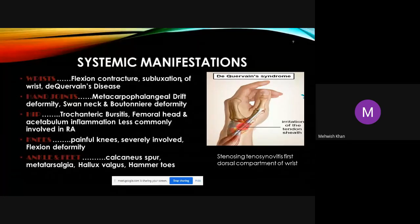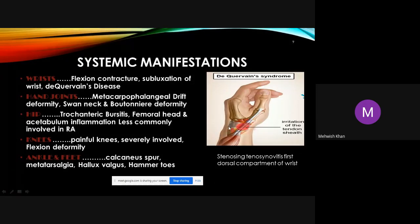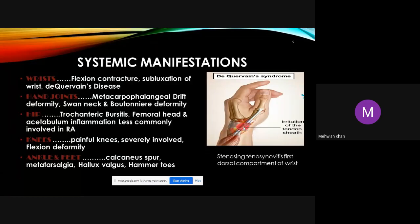Subluxation of the ulna and radius is common in RA, with joint alignment visibly changed. Another wrist condition is De Quervain's disease — inflammation of the tendon sheath at the thumb level at the scaphoid bone, also commonly seen today in people who spend excessive time texting or typing.